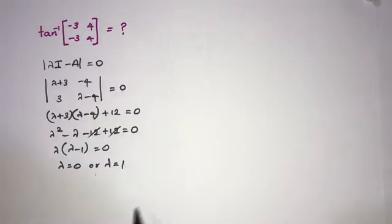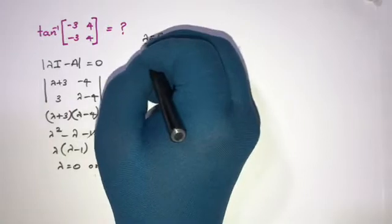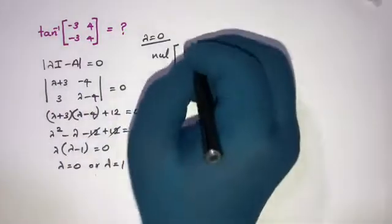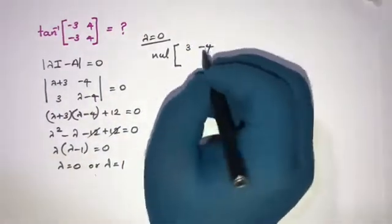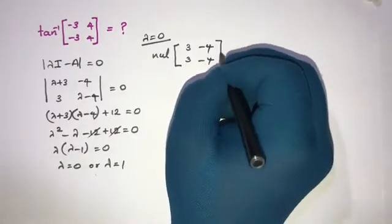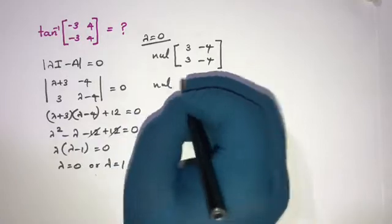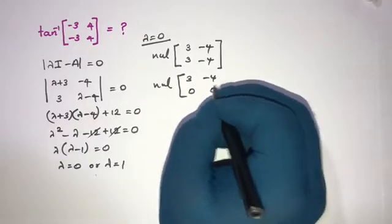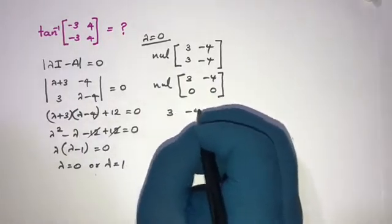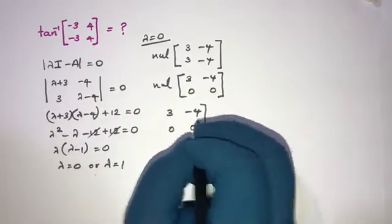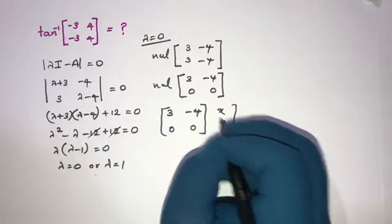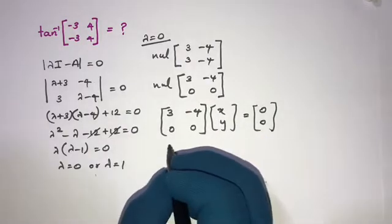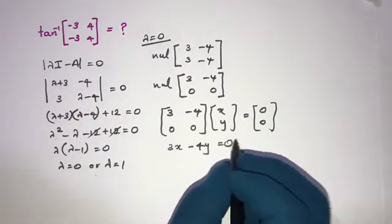Now we find the eigenvectors. For λ equals 0, we compute the null space. The matrix gives us rows 3, minus 4 and 3, minus 4. Row reducing, we get the single equation 3x minus 4y equals 0, with the other rows becoming zero.